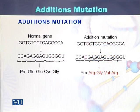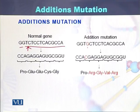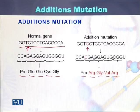This is another example of addition mutation. In case of the normal sequence of the gene, a new nucleotide has been added between T and C. As a result of this new nucleotide, the original sequence of the protein was proline, glutamic acid, glutamic acid, cysteine, glycine. Now it has become proline, arginine, glycine, valine, and arginine. So there was addition of just a single nucleotide, and due to the addition of that single nucleotide, the entire amino acid sequence has been changed.